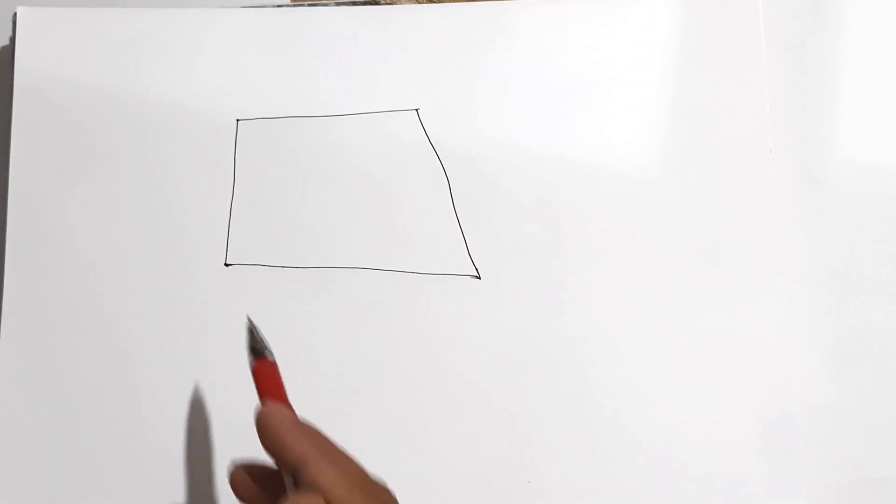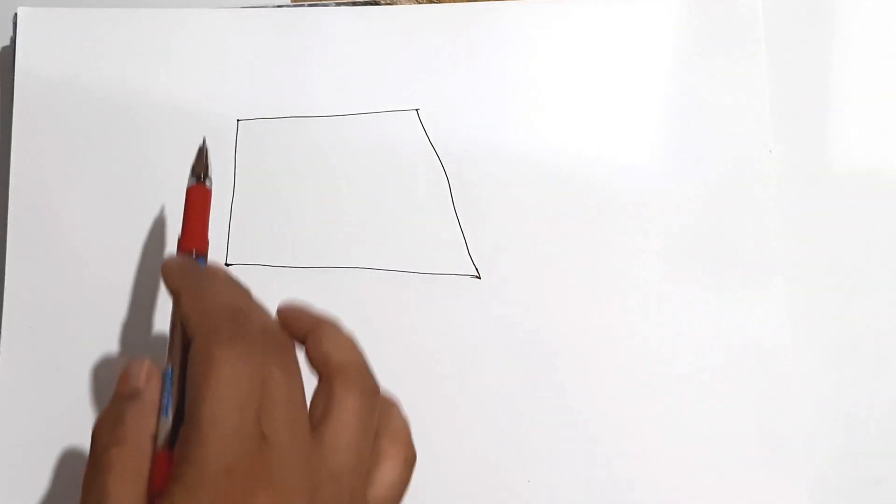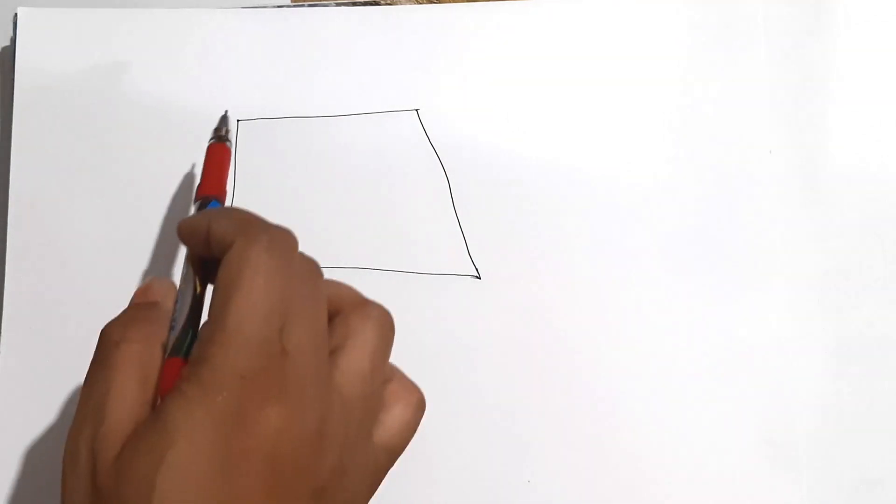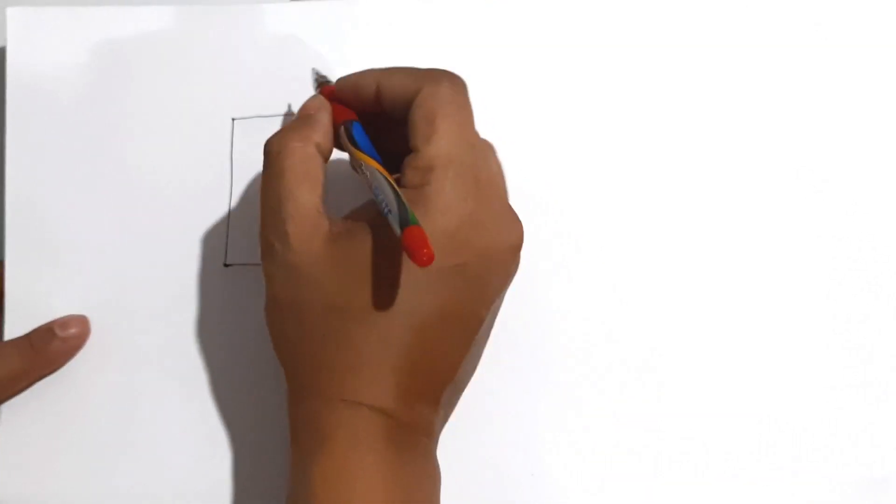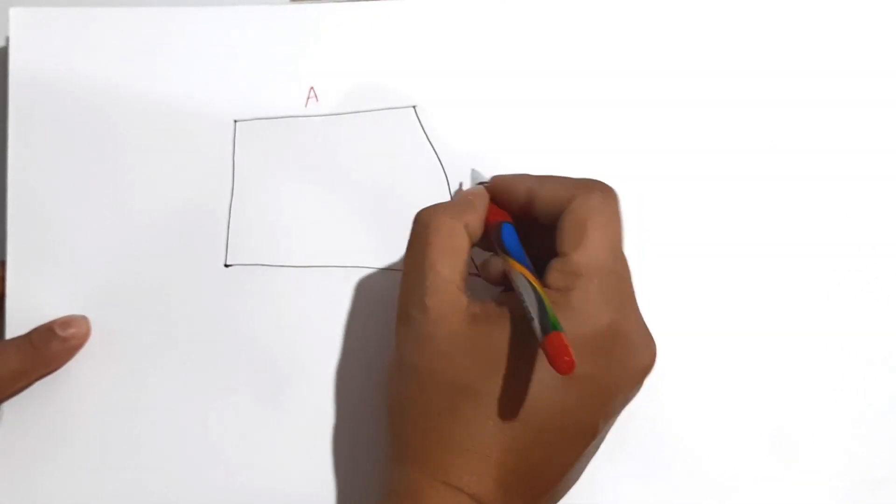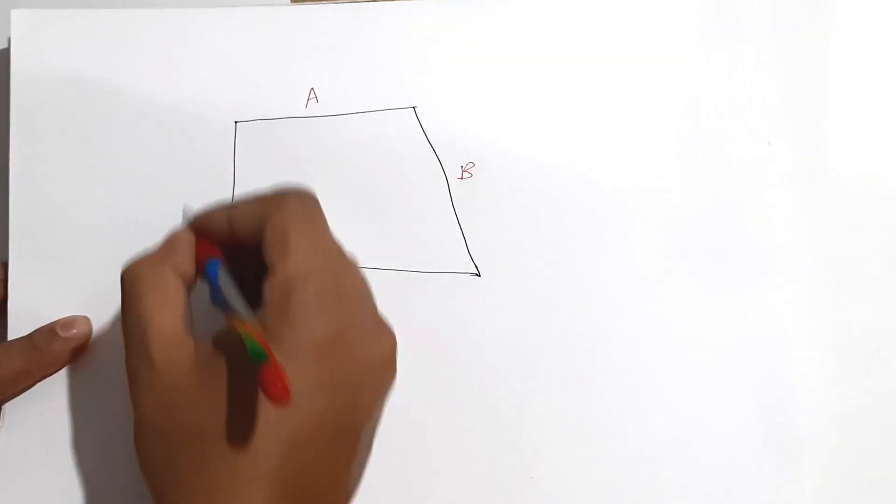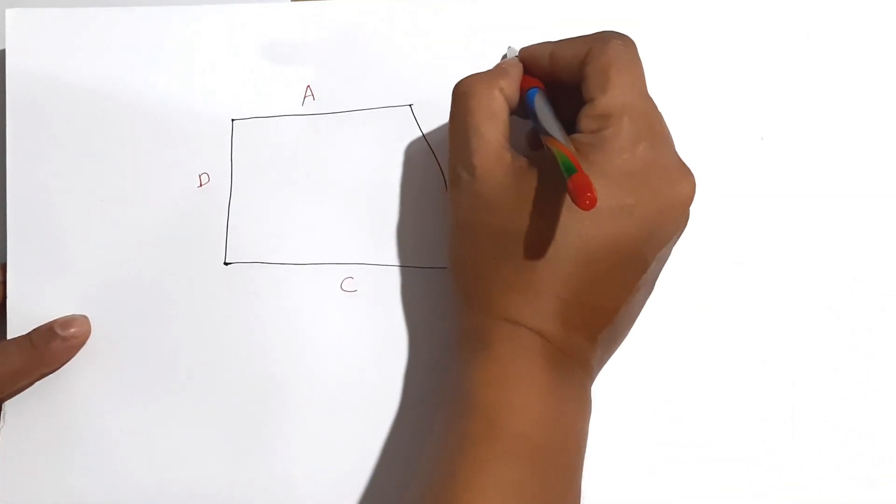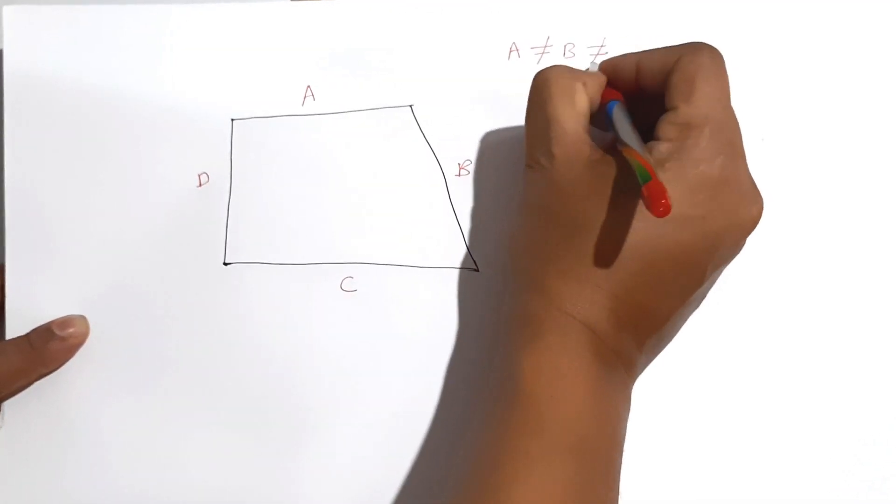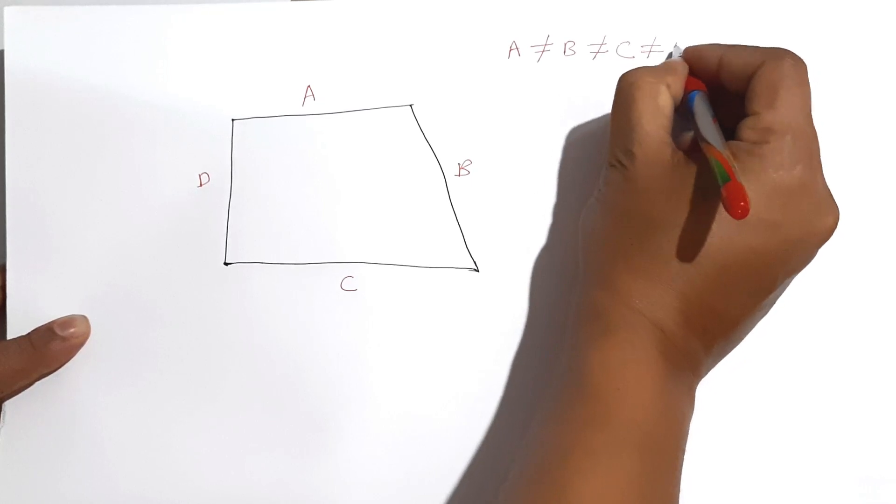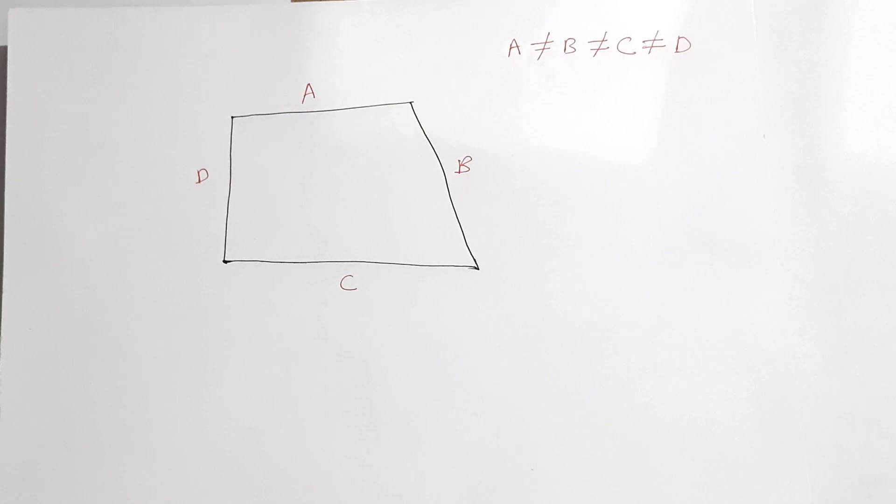Now suppose this is an area. And this four parts, the four different sides are different. Suppose this is say A. This is say B. Then this is say C and this is D. That means A is not equal to B, not equal to C, not equal to D. All four sides are different. So how we will calculate now?